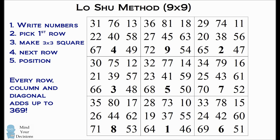Now the amazing thing is that this 9 by 9 arrangement of numbers, every single row, column, and diagonal adds up to 369.